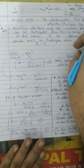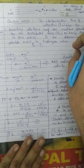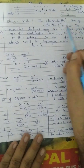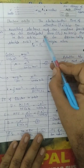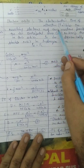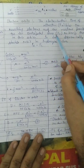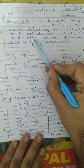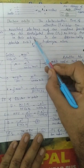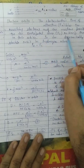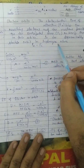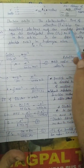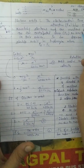So the electrostatic force of attraction between the revolving electron and the nucleus provides the centripetal force. This force of attraction provides the centripetal force to keep the electron revolving in the orbit. So for a dynamically stable orbit in the hydrogen atom, we consider this particular atom which is called hydrogen.